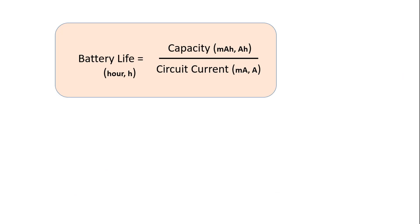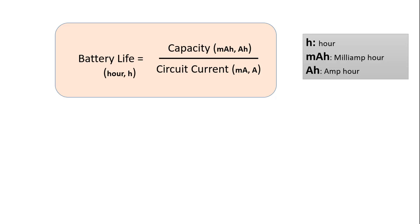The life of the battery is calculated by the formula here. It is found by dividing the capacity by the current. The capacity can be milliamp hours or amp hours. Similarly, the circuit current can be milliamps or amps. From here, the battery life is calculated in hours.